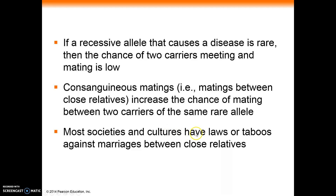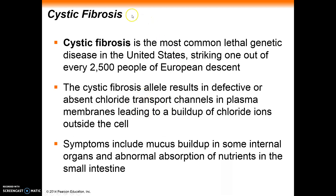Pretty much all societies and cultures have these types of taboos. When you look at deviations from that — such as in royal families where not many people fall into the category of being worthy of marrying royalty — you do get inbreeding and you start seeing various conditions crop up. Anemia was fairly common, and hemorrhaging disorders — you see recordings of that in history.